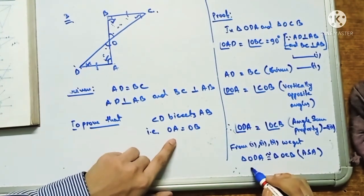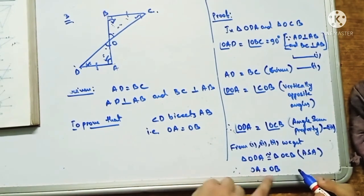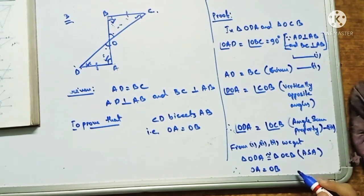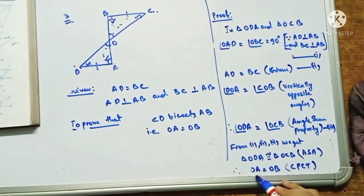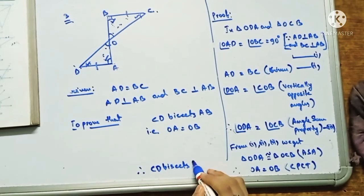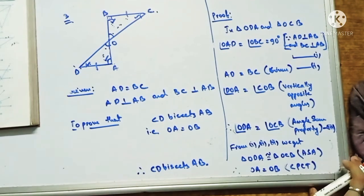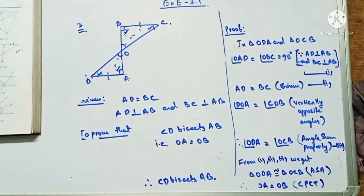From equations one, two, and three, triangle ODA is congruent to triangle OCB by ASA (Angle-Side-Angle). Since these two triangles are congruent, OA equals OB by CPCT. Therefore, CD bisects AB.